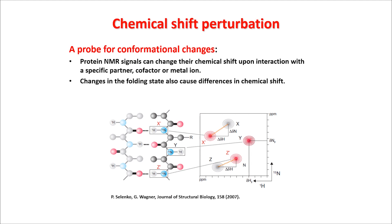However, in cases when you can still detect protein signals, the most important type of information you can obtain from in-cell NMR is chemical shift perturbation. As you may know, chemical shift is extremely sensitive to any changes in the chemical environment of the nucleus. This means that for each nucleus you can observe, chemical shift changes between cell and in vitro will directly report on any changes — like conformational changes or chemical changes — occurring in the cellular environment. This is the most powerful approach for using in-cell NMR to analyze proteins: by mapping chemical shift changes, you can understand whether there is a conformational change or whether interactions are occurring on specific parts of your protein.